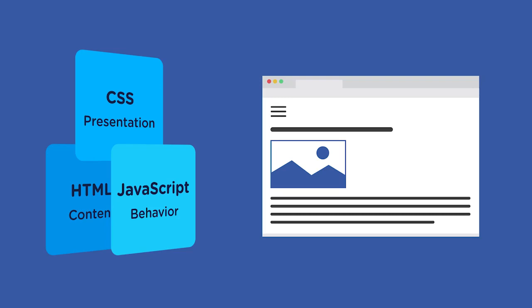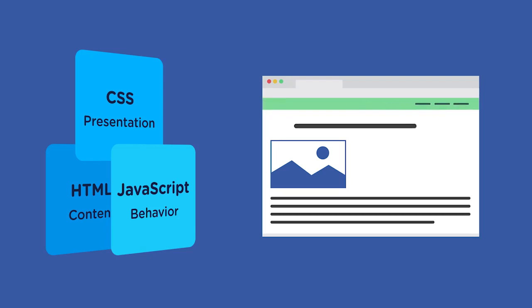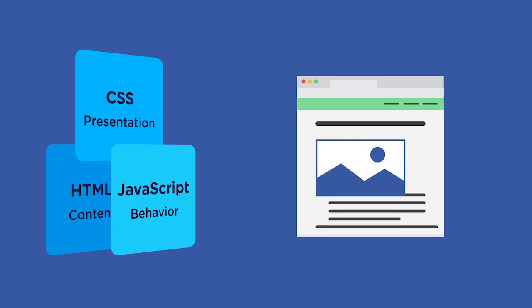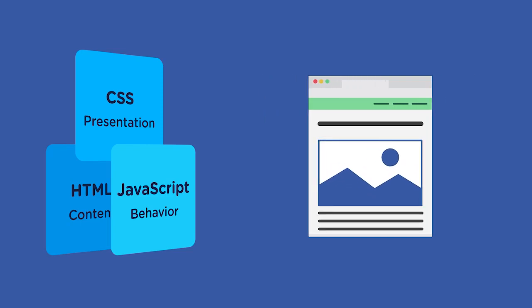We use our style sheets to style the HTML with colors, font sizes, backgrounds, layout, and much more. CSS also allows us to adapt our content to various devices, screen sizes, and resolutions. As we move forward, you'll learn strategies for keeping these three layers separate from each other — HTML for content, CSS for style, JavaScript for behavior.